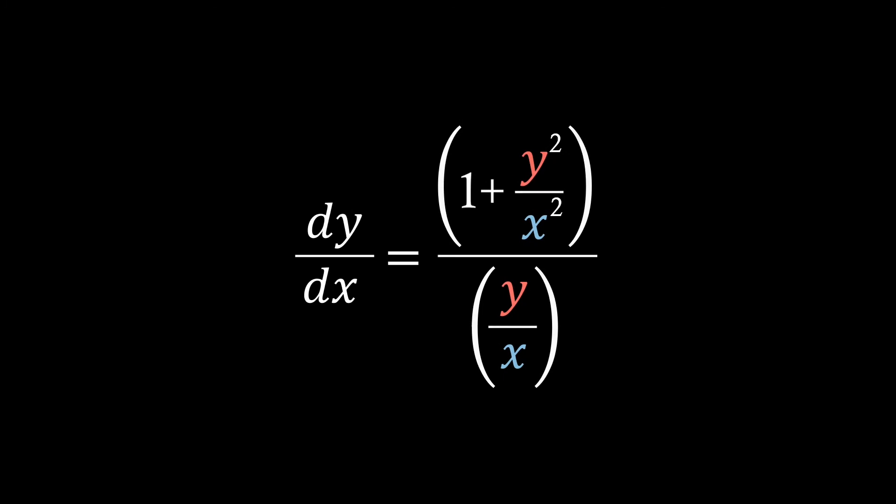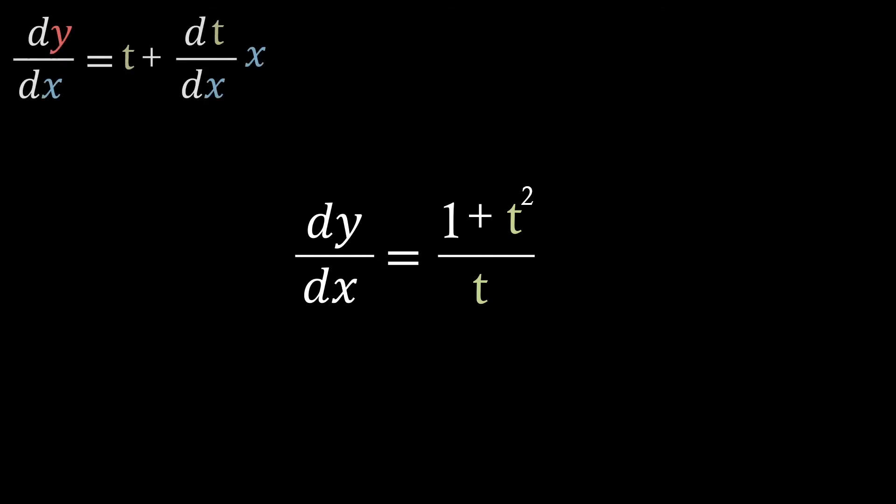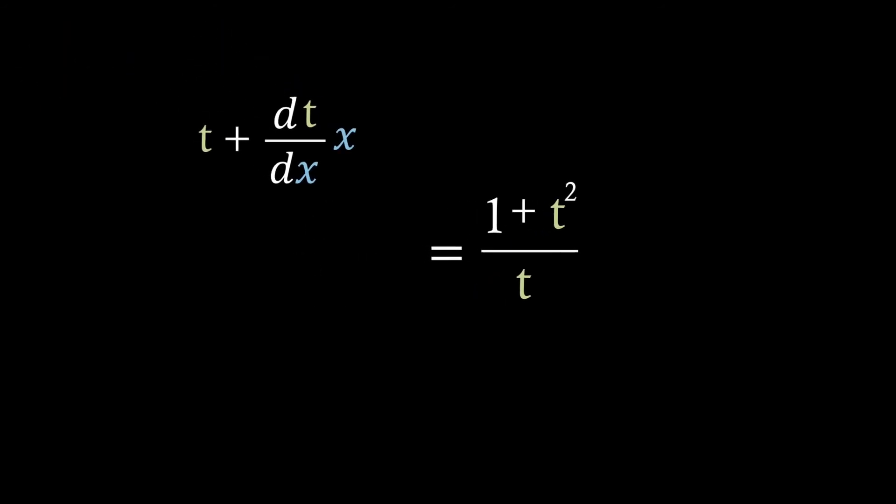Now if we just recall that we let y over x equals t. So if we make a substitution we're just left with dy over dx equals 1 plus t squared over t. So remember I told you that it'll be useful to know what dy over dx is in terms of x and t.